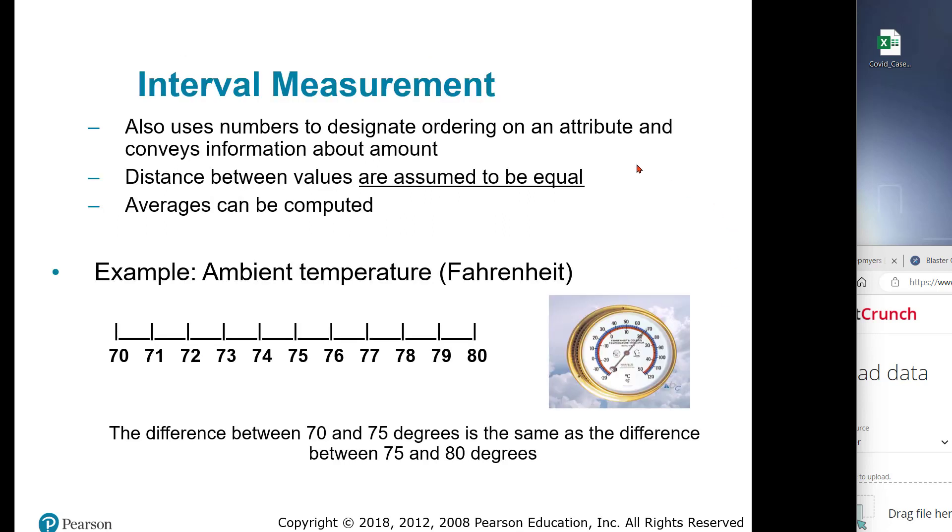The next levels of measurement, interval and ratio, are the ones we do most of the stats on. Interval measurements are where the distance between values are assumed to be equal. Temperature in Fahrenheit, pressure, and miles per gallon are all interval measures. The numbers between each one of the values are assumed to be equal.